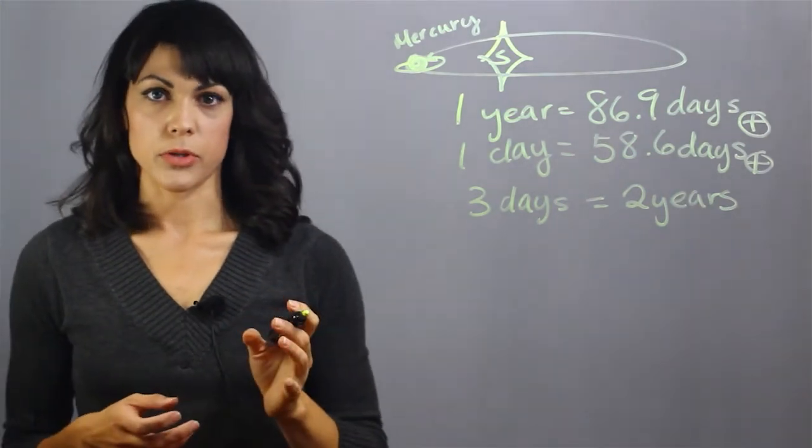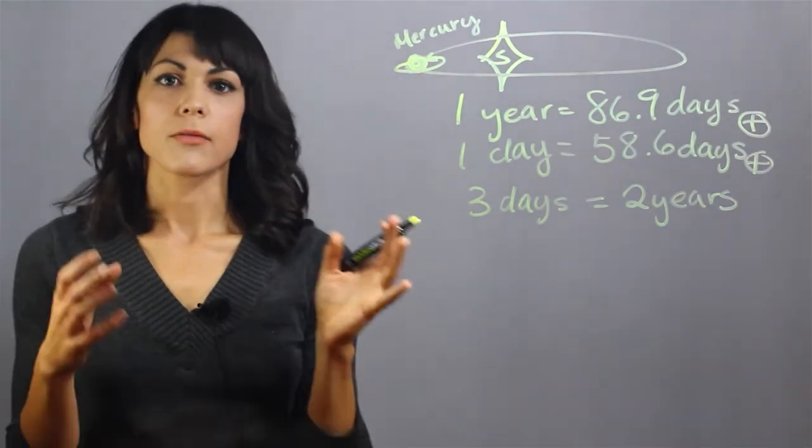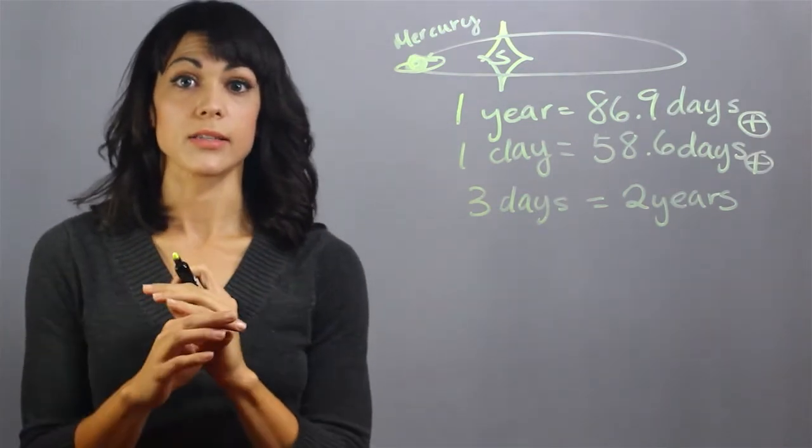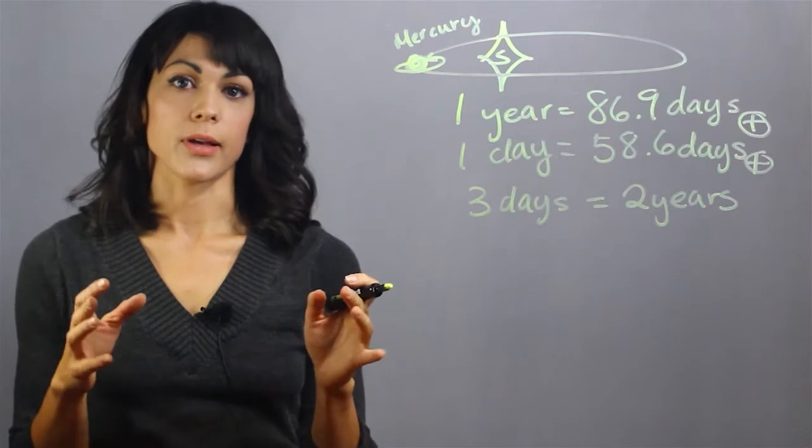What does that mean for the temperature on Mercury? It means that for 30 days, one side is exposed to direct sunlight, and for 30 days the other side is exposed to no sunlight at all.